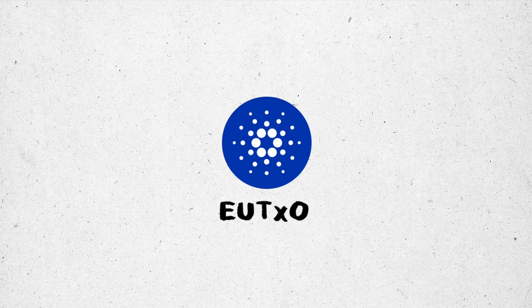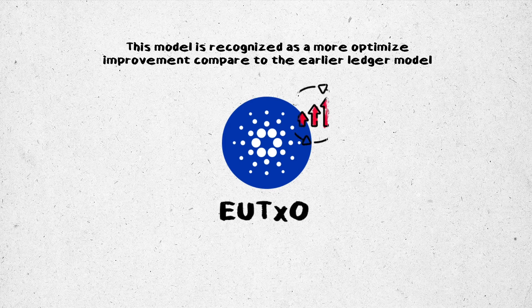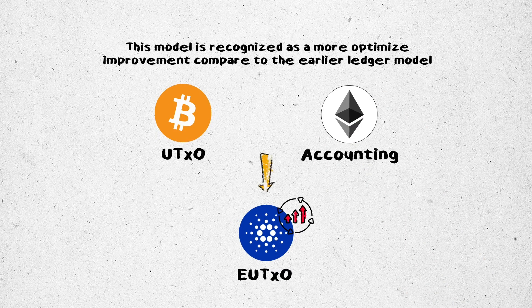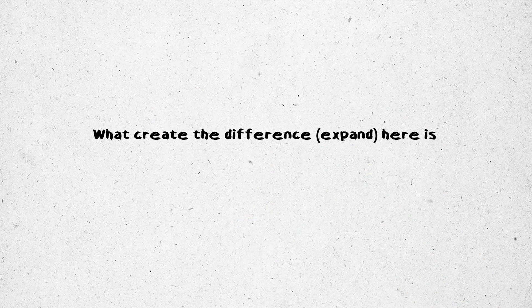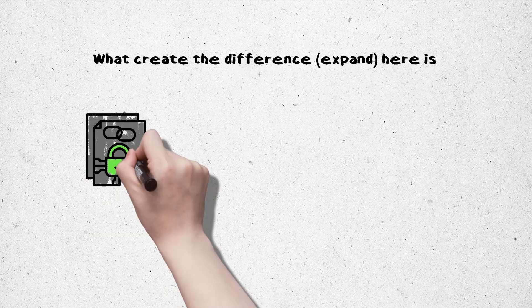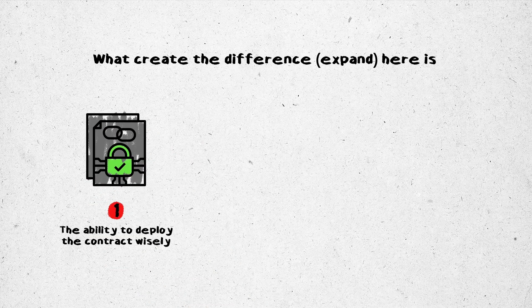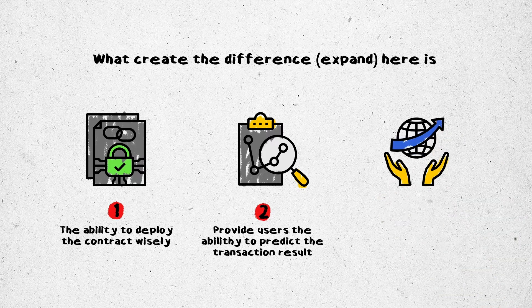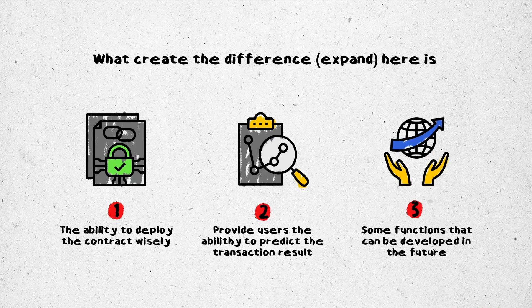EUTXO, meaning Extended Unspent Transaction Output, is recognized as a more optimized improvement compared to the earlier ledger models: the UTXO model of Bitcoin and the accounting model of Ethereum. What creates the difference are: first, the ability to deploy smart contracts; second, providing users the ability to predict the transaction result; third, some functions that can be developed in the future.